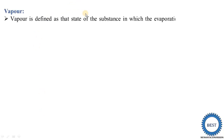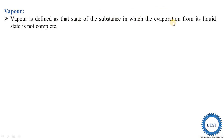Vapor is defined as that state of the substance. We know that any substance has three possible states: either it is in solid state, either it is in liquid state, or it is in gas state. Vapor is also one type of state of the substance in which the evaporation from its liquid state is not complete. When we supply heat energy to any liquid, it starts to evaporate, but the evaporation process is not complete. That means there is a mixing of two things — it is a mixture of gas and water vapor.